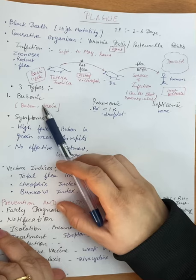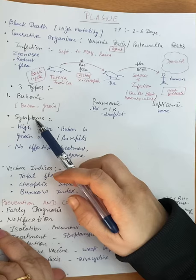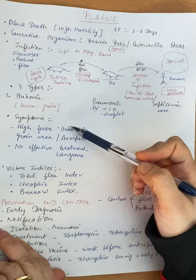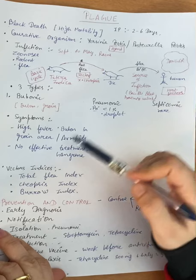A bubo is actually a swelling or abscess, and it typically develops in the groin because rat fleas usually bite the lower extremities. The infection travels to the lymph nodes of the groin region, forming a bubo. The patient develops very high fever, and the infection can also spread via lymph vessels to the armpits. Bubonic plague has no effective treatment and is very dangerous.